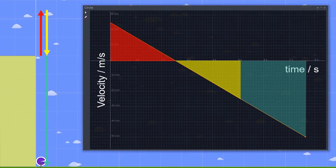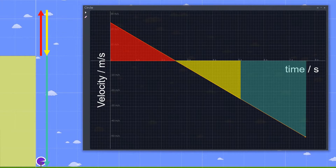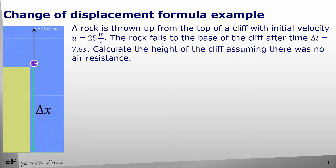We could use the area under the velocity-time graph to find the answer. The red triangle represents distance travelled on the way to the top, the yellow triangle shows the same distance when the rock travels back to the level of the top of the cliff, and the green area represents the distance equal to the height of the cliff. The green area also represents the total change in displacement: initially the rock was on top of the cliff, and after 7.6 seconds it is at the bottom. So calculating the total change of displacement gives us the height of the cliff. Instead of using the graph, we will solve this problem using our newly derived formula.